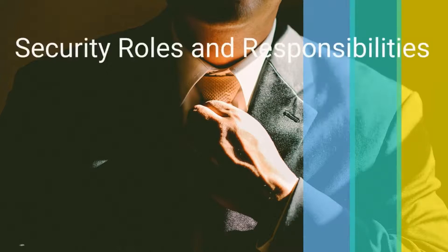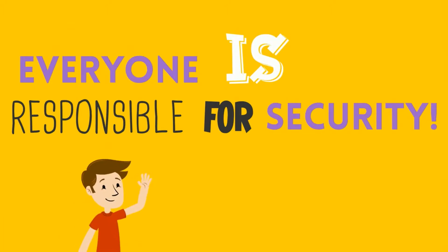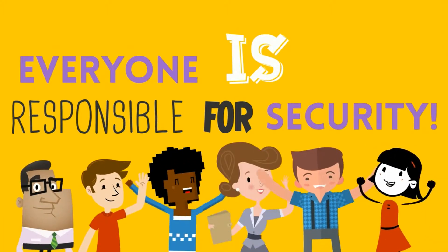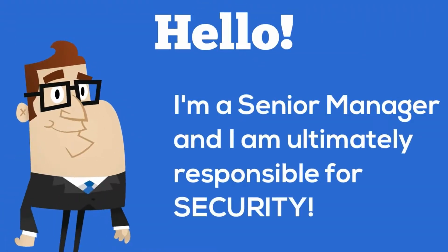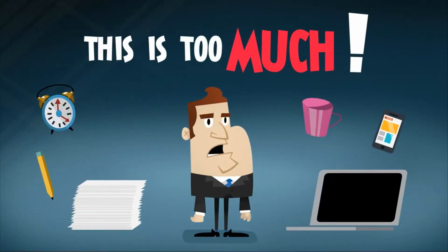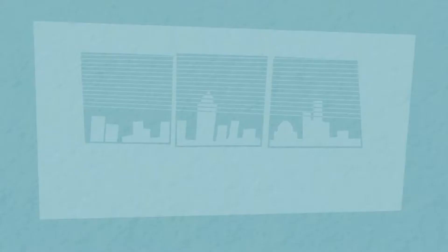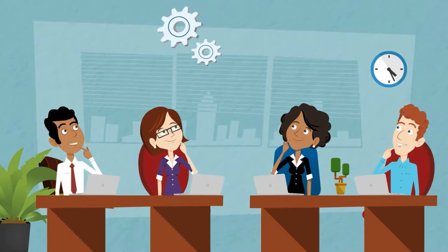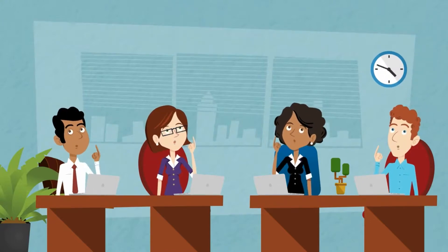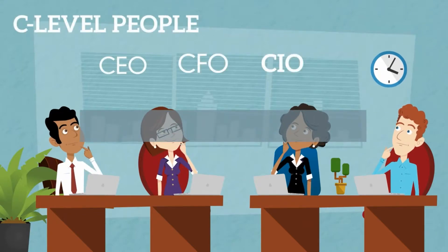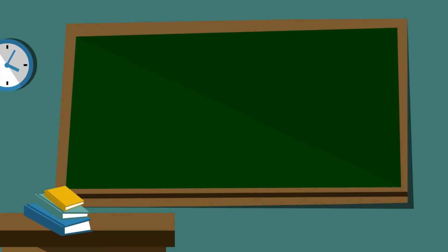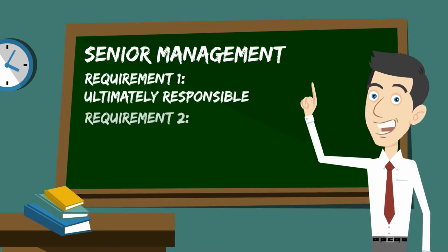This next topic gets into the decomposition of the security roles and responsibilities. We talked about everyone being responsible for security earlier, but really when the stuff hits the fan, senior management is always ultimately responsible for security. Usually when something happens within the organization, senior management's head is the first to roll. Senior management includes people like the chief executive officer, the chief financial officer, the chief information officer — any of the C-level people within the organization — those are the people ultimately responsible for protecting the organization, especially in the security mindset.